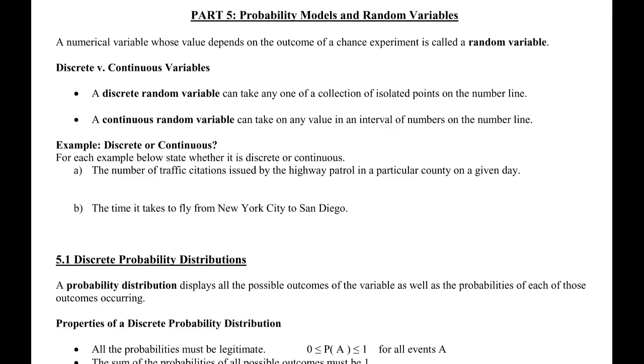In part four, we dealt with mostly event spaces that were related to categorical variables, whether someone ate breakfast or didn't eat breakfast, whether all the kittens that were selected were black or none of them were black. In part five, we're going to start looking at how we deal with quantitative random variables.